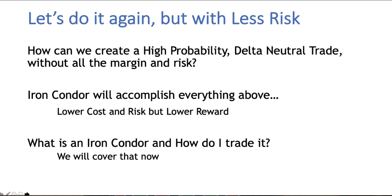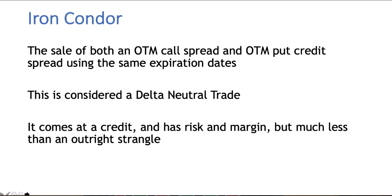This week let's do it again, but with less risk. How do we create a high probability delta neutral trade without all the margin and risk? An iron condor will accomplish everything above. It creates a lower cost trade and a lower risk trade, but it also comes with lower reward. An iron condor is the sale of both an out-of-the-money call spread and an out-of-the-money put spread — these are credit spreads — using the same expiration date. It's considered a delta neutral trade because we're not looking for the stock to really go anywhere. You can do it at a credit, but it also comes with much less margin than an outright strangle.